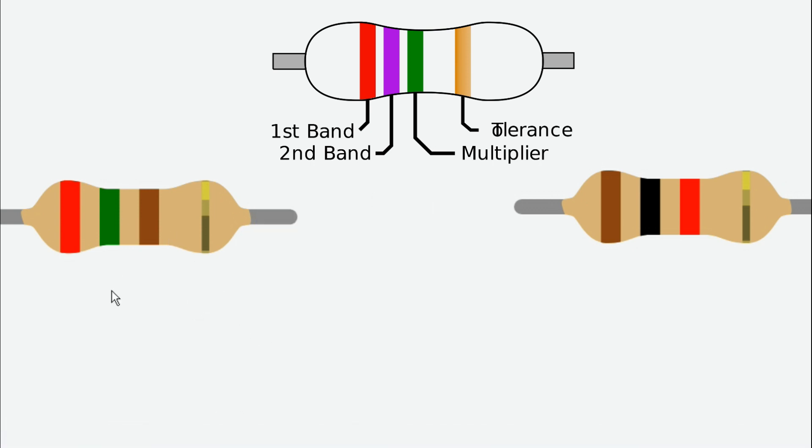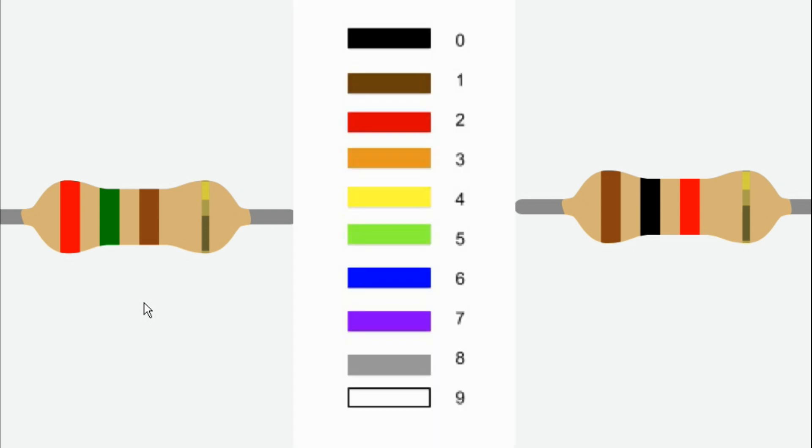Now we can see the color bands. Here the first band is red. Let's check the color - the first band is red, the second band is green. So first is 2 and second is 5.